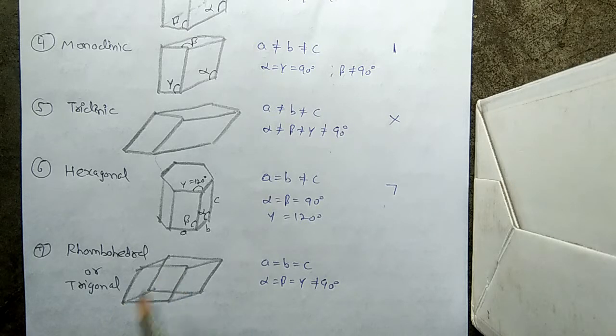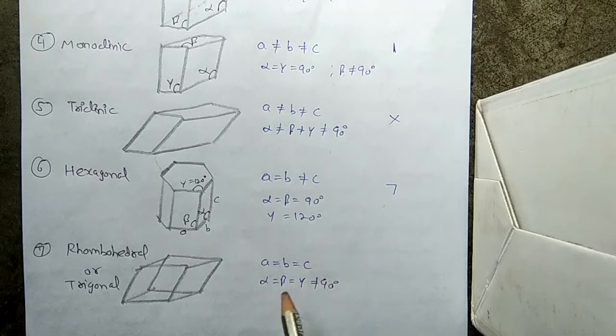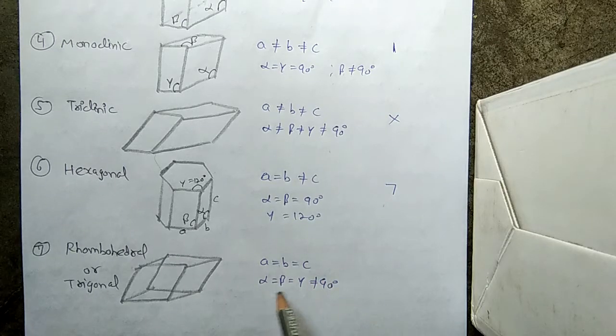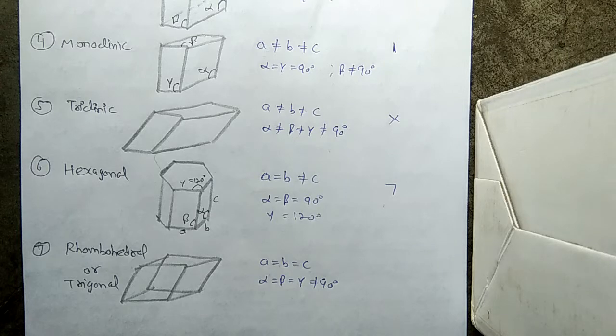The last one is Rhombohedral, also called Trigonal. This is like a cube but twisted. In this system, all three sides are equal, and alpha equals beta equals gamma, but they are not equal to 90 degrees.